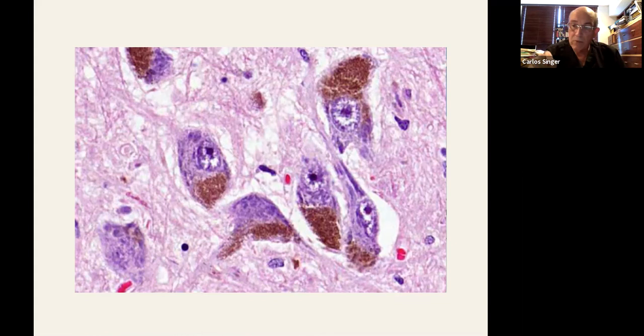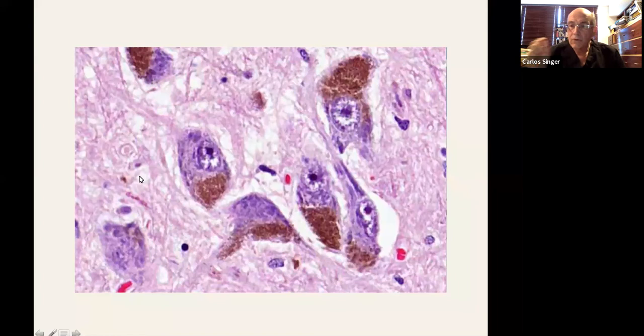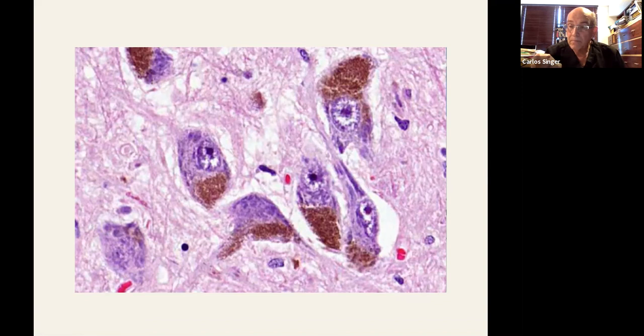If you do a similar stain and a similar slide of the locus coeruleus, where you have cells that are producing noradrenaline, norepinephrine cells will also have neuromelanin, which will be a polymer of norepinephrine. And we see locus coeruleus is involved in Parkinson's.